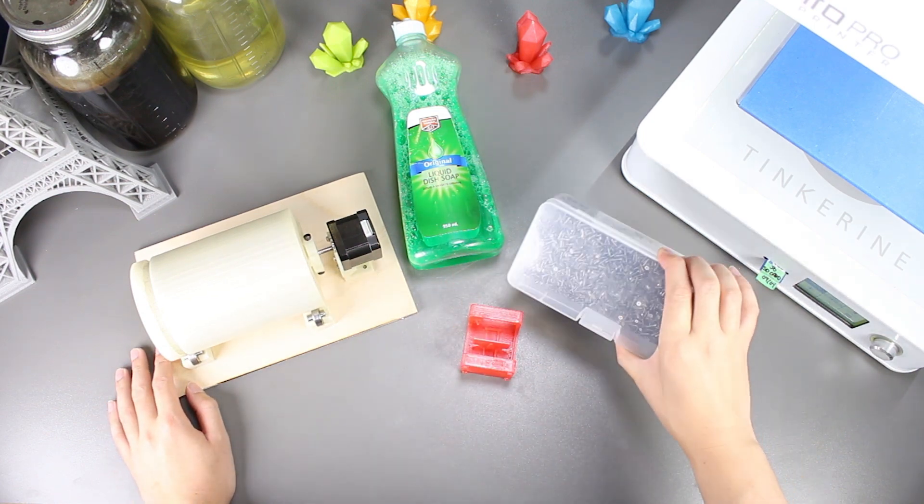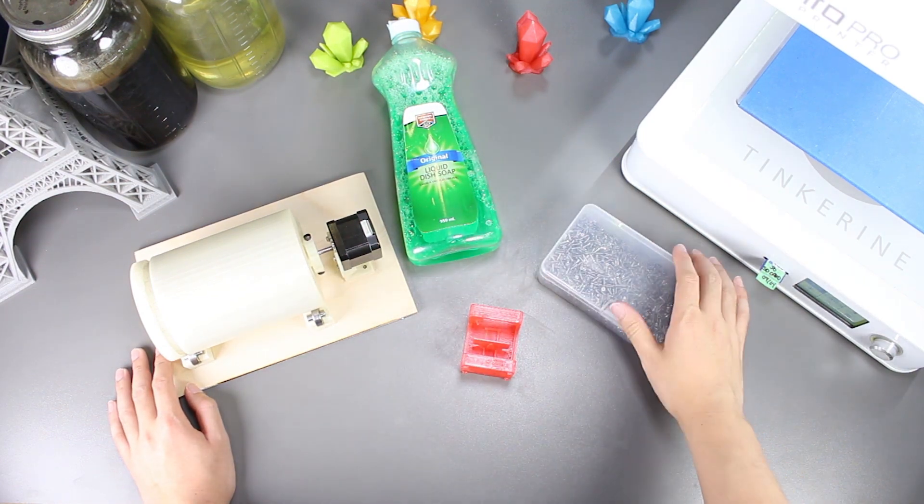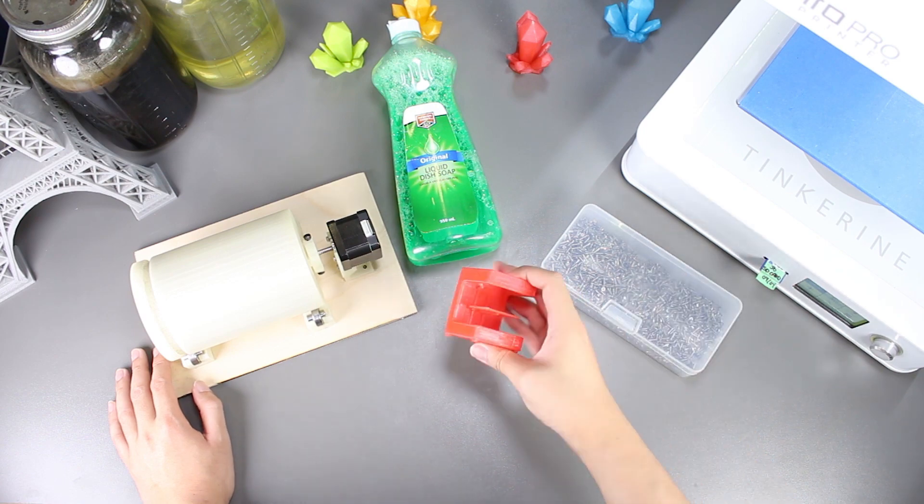Welcome to another episode of Tinkering Experiments. In this episode, we will be trying to smooth out our PLA print with our rock tumbler again.